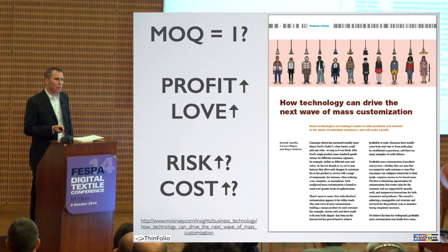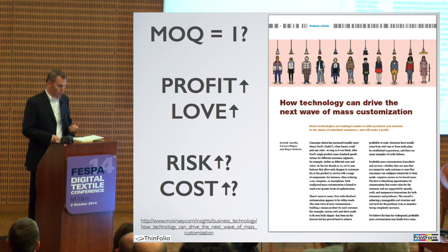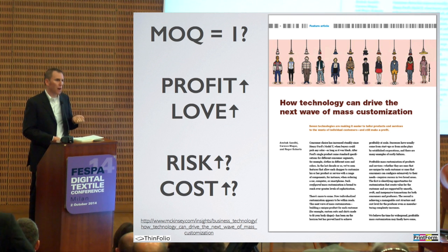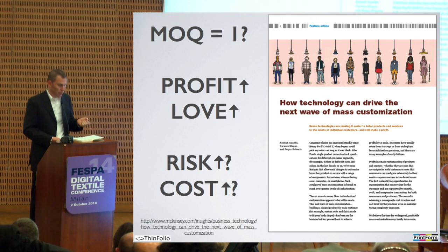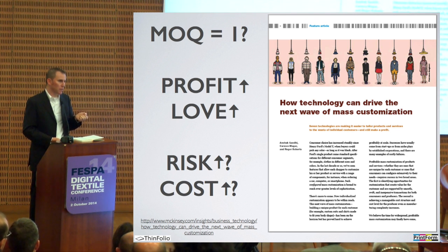Do we really want to focus as an industry on a minimum order quantity of one piece? Well, it's inevitable because our customers are demanding it — there's really no way to avoid it. But the good news, from a McKinsey paper I'd encourage everyone to look at, is that we can charge higher prices for unique products you simply can't get anywhere else. Customers are delighted, they absolutely love us. But we need to be very mindful of the risk and cost involved with these sorts of endeavors.